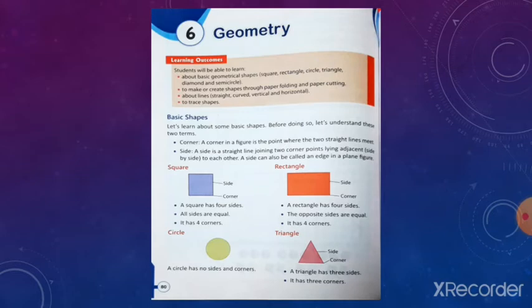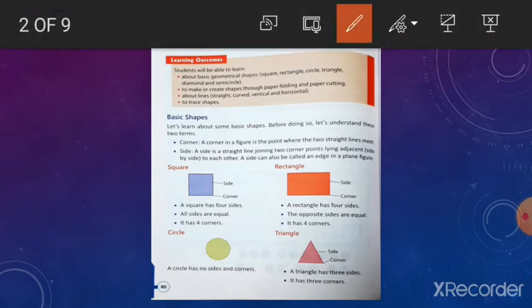This is page number 80. Corner. A corner in a figure is the point where the two straight lines meet. A side is a straight line joining two corner points lying adjacent to each other. When we add two points, we get a straight line. These are straight lines, and these are called curved lines.